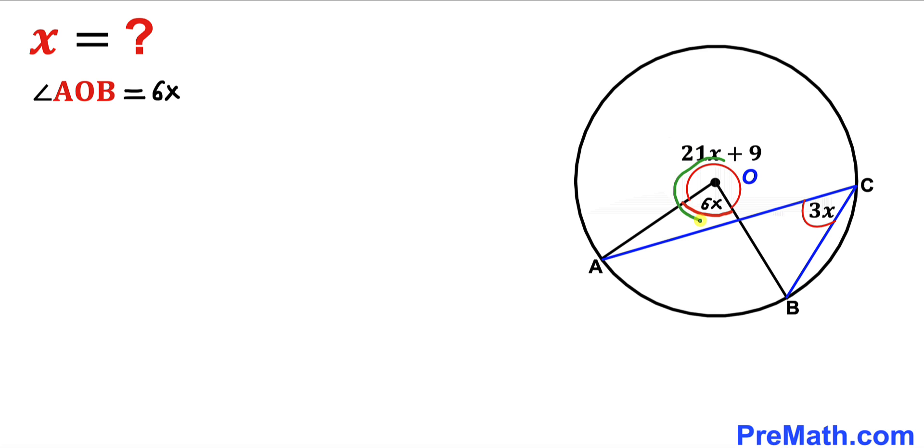Now we can see that these two angles complete the whole cycle. So that means this is going to give us 360 degrees. Therefore we are going to add these two angles up and that should be equal to 360.